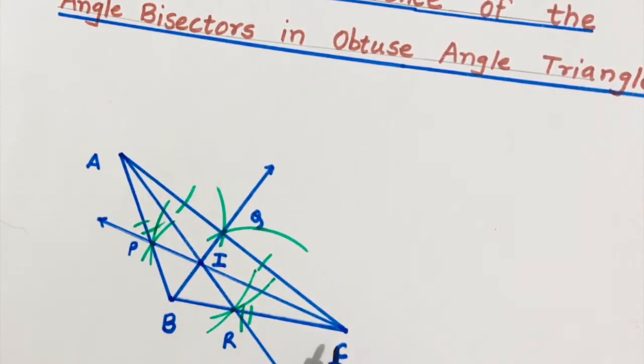So in an obtuse angle triangle, the angle bisectors meet at the interior.